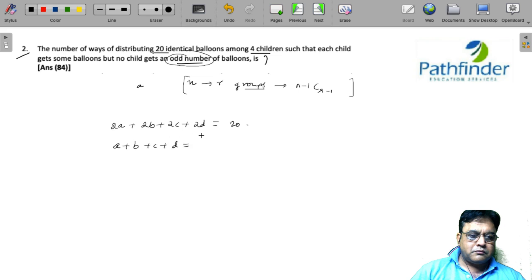So essentially we have to divide 10 into 4 groups, 10 balloons into 4 groups in such a way that each group has at least one. In how many ways can we do that? n equals 10, r equals 4. We can do that in n minus 1 C r minus 1, so 9C3 ways, which equals 84 ways.